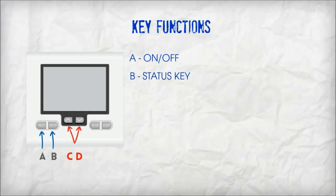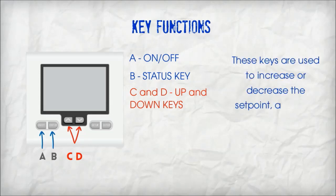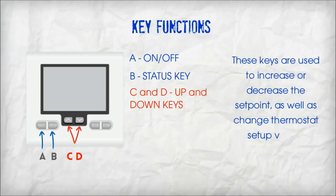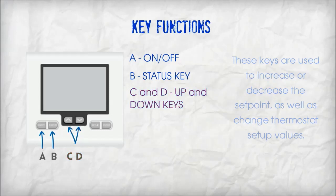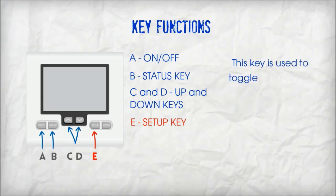Keys C and D: up and down. These keys are used to increase or decrease the set point, as well as change thermostat setup values. Key E: setup key. This key is used to toggle through the thermostat setup menu.